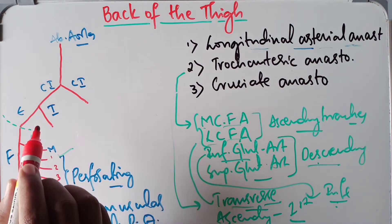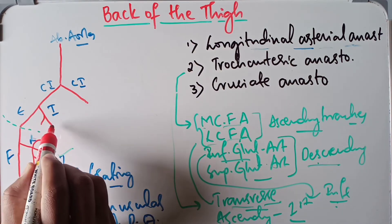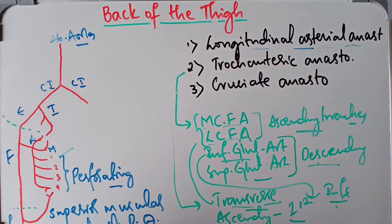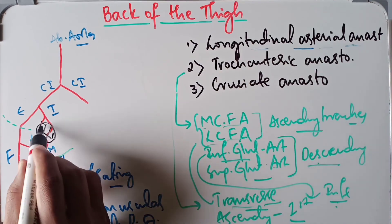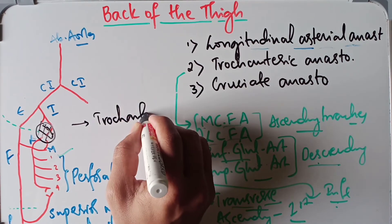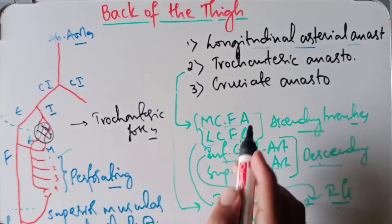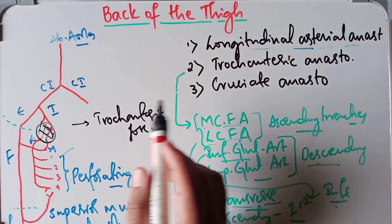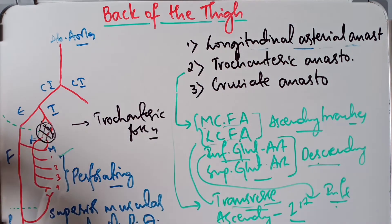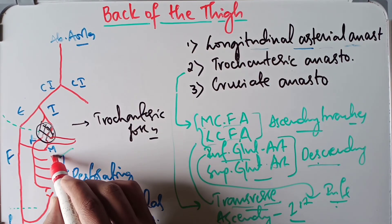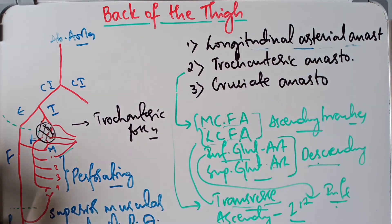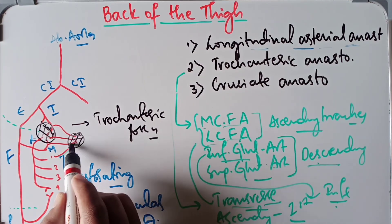From the internal iliac artery we have the superior gluteal artery, the inferior gluteal artery, and these along with the lateral circumflex femoral artery and medial circumflex femoral artery all take part in the formation of the trochanteric anastomosis, which is situated in the trochanteric fossa. The cruciate anastomosis is situated on the back of the femur at the level of the lesser trochanter, and is formed by branches of the lateral circumflex femoral artery, medial circumflex femoral artery, the first perforating artery, and the descending branch of the inferior gluteal artery.